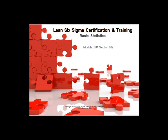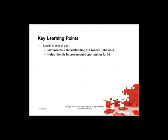This is Module 4, Section 2 of our Lean Six Sigma Certification and Training. This is the module on basic statistics. The key learning points from this module are around the fact that simple statistics can increase your understanding of process behaviour and help identify improvement opportunities for 5S and right throughout the workplace.